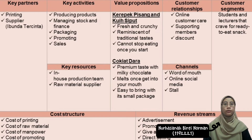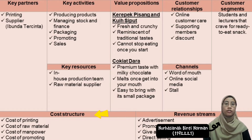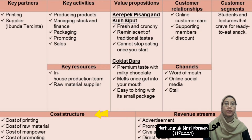Next, let us move to the cost structure for our business. In our production, we incur several costs to ensure all products are produced in a reasonable manner. Such costs include the cost of printing, cost of raw materials, cost of power, and cost of promotion. There are also hidden costs like stationery as well as overhead costs such as utilities, repair and maintenance.